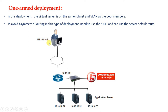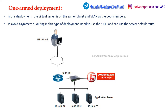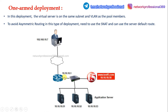In this topology we have a user from the 192.168.10.0/24 network, so the user IP is 192.168.10.7. We have another network 10.10.10.0/24 where the virtual server and actual application server pool members are hosted. Generally in this deployment method, the default gateway IP configured in the server will be the IP address of the router.